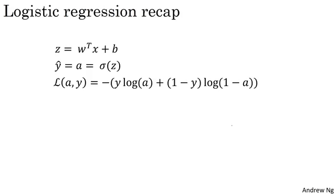To recap, we had set up logistic regression as follows. Your predictions ŷ is defined as follows, where z is that. If we focus on just one example for now, then the loss with respect to that one example is defined as follows, where a is the output of logistic regression and y is the ground truth label.